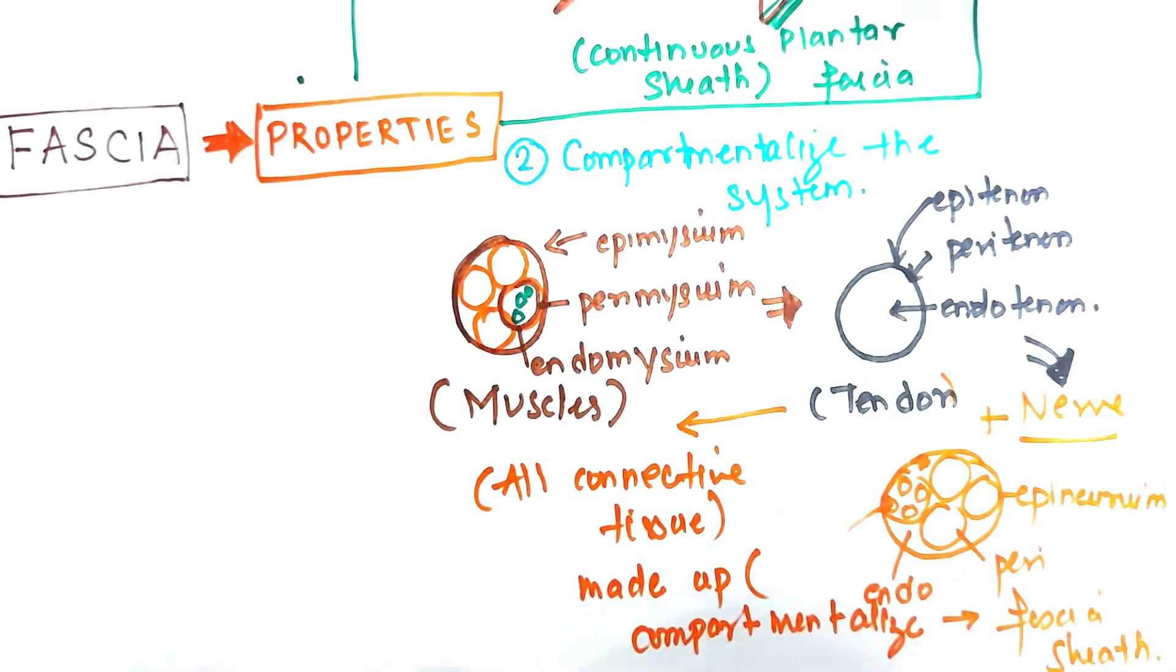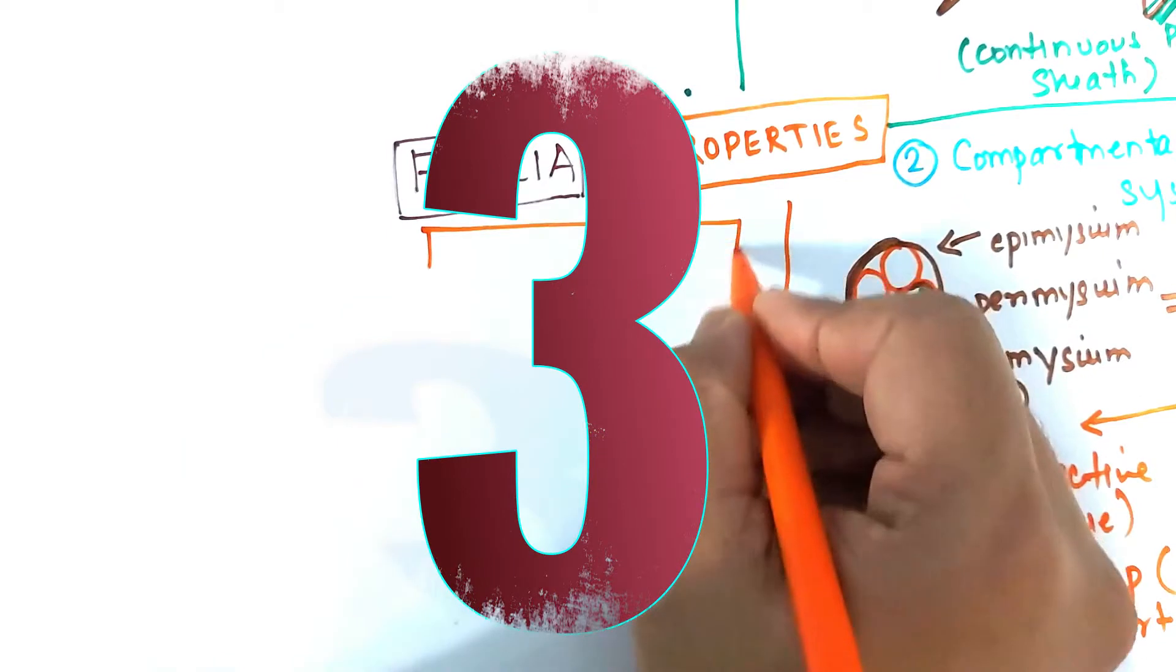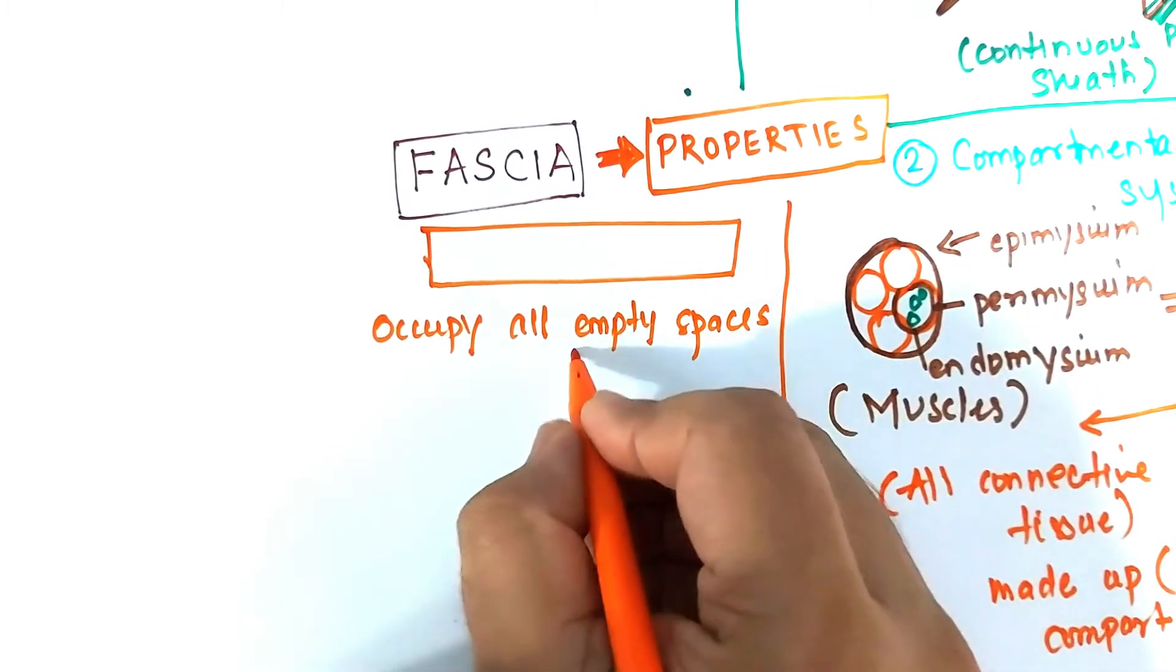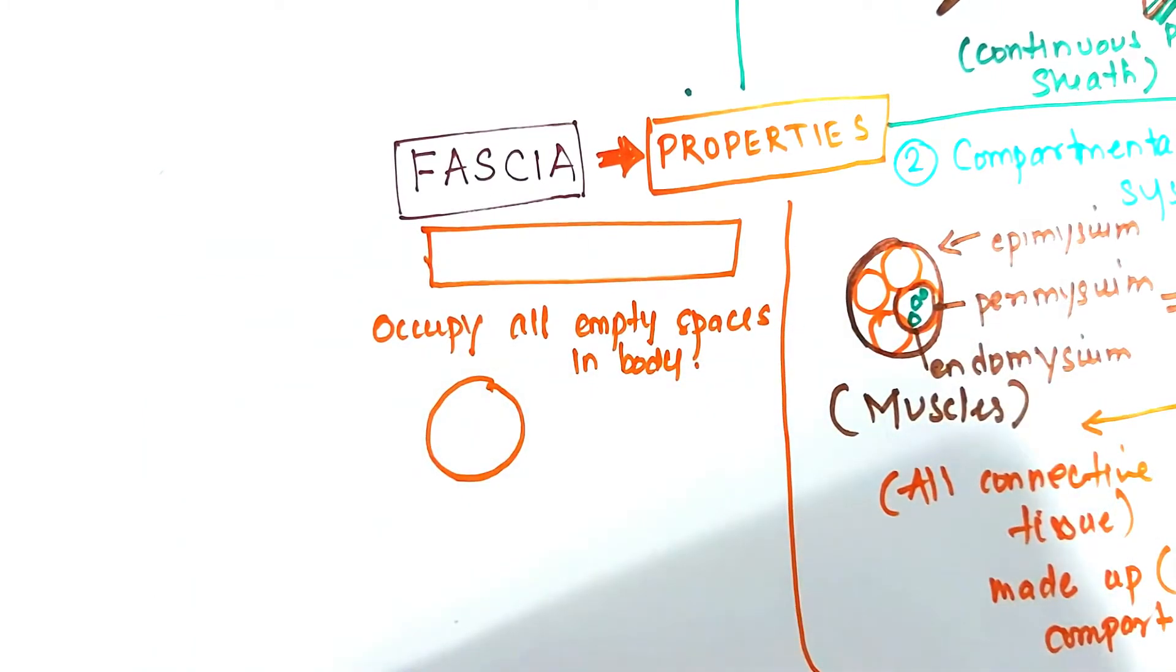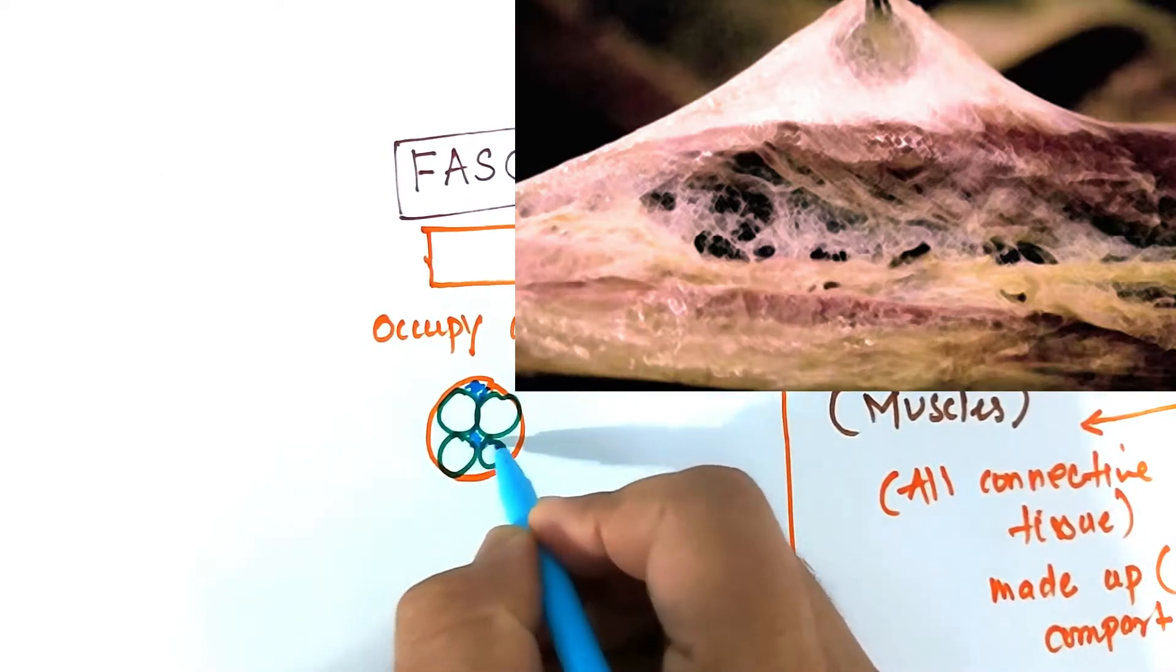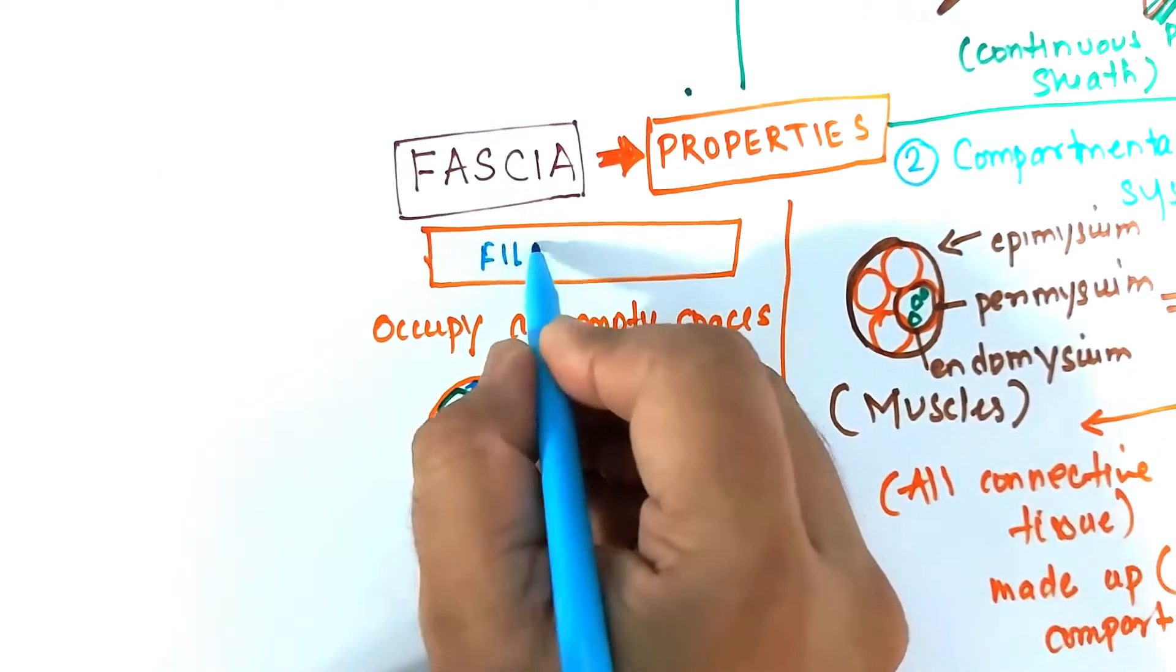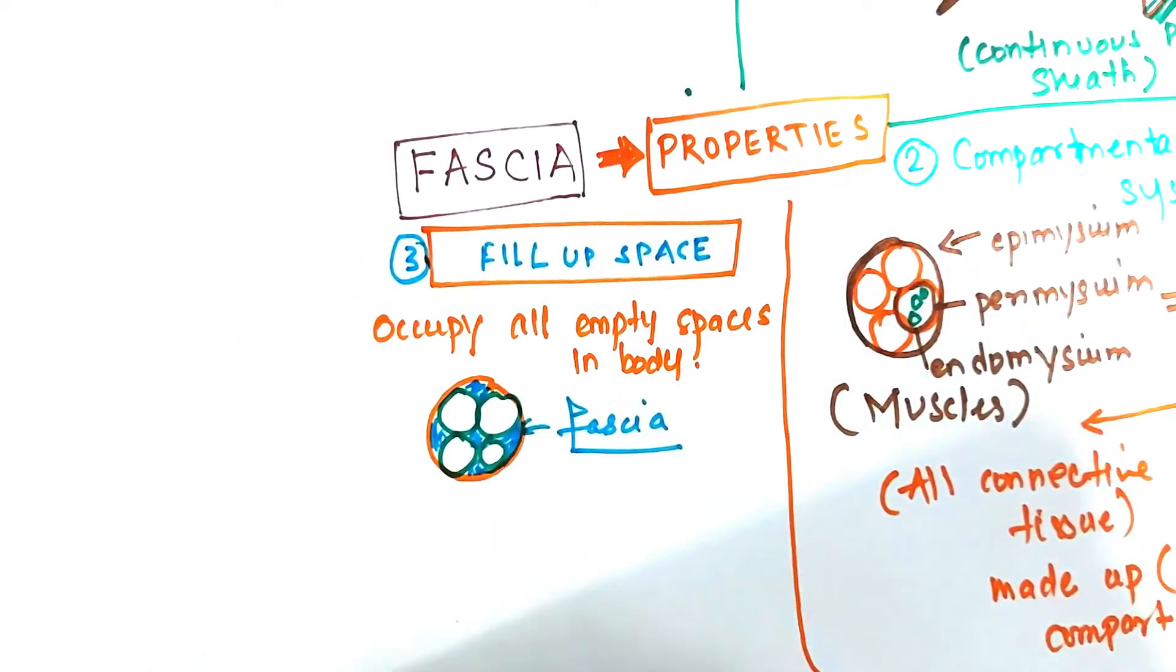Let's move to the next property of the fascia, where exactly is the fascia present. So till date, scientists have discovered four types of fascia: the superficial, deep, the fascia surrounding the organs, and around the brain that is the meninges. So fascia presence has been found everywhere in the body. Every living connective tissue space is filled up by fascia. So there is absolutely no empty spaces in the human body. Everything is filled up or covered by this particular connective tissue called as the fascia.